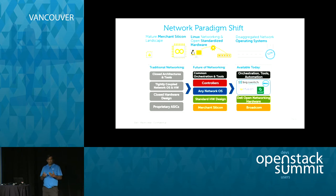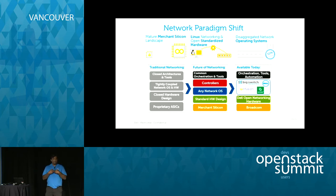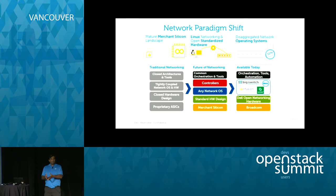Companies like Cumulus and Big Switch came along, saying they're software companies building software that can run on a commodity-based switch. So Dell decided to jump in headfirst. Having acquired Force 10, Dell has its own OS called OS 9, which we support on our ON switches. But open networking means we also support other OSes — we started with Cumulus and Big Switch, and recently introduced IP Infusion, which brings MPLS support: Layer 2/3 VPN and LDP for edge routing use cases.